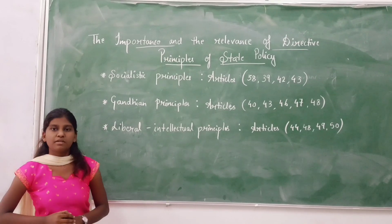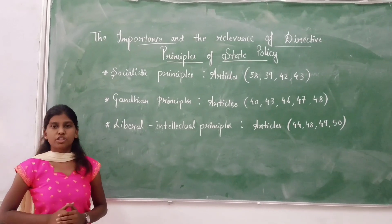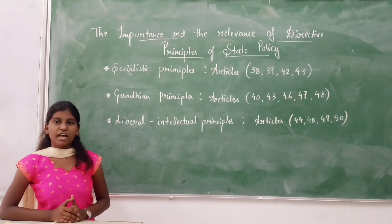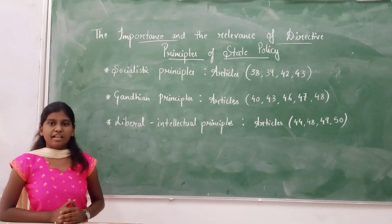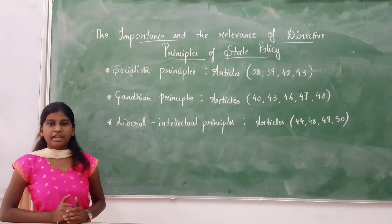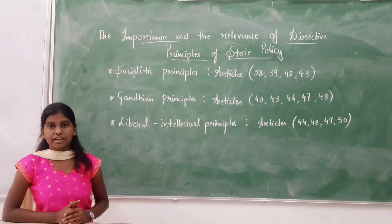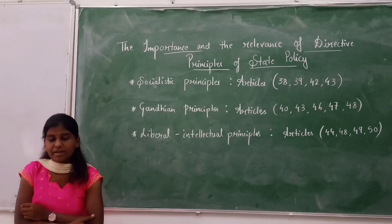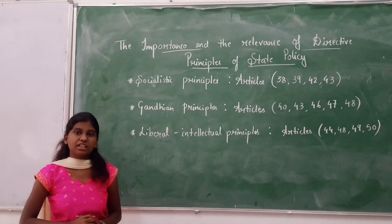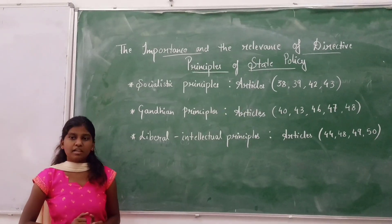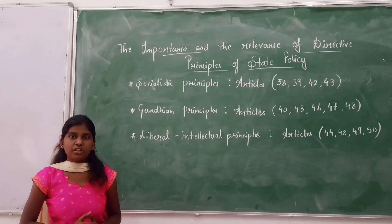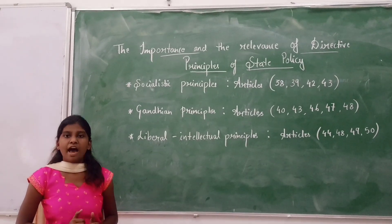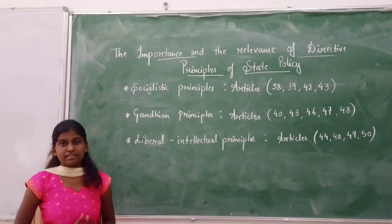The directive principles of state policy aim to create the social and economic conditions in which a citizen can lead a good life. This helps in establishing social and economic welfare of the state. Directive principles are the non-justiciable rights of the people but are fundamental to the governance of the country. It shall be the duty of the state to apply these principles in making laws, as per article 37. Thank you.